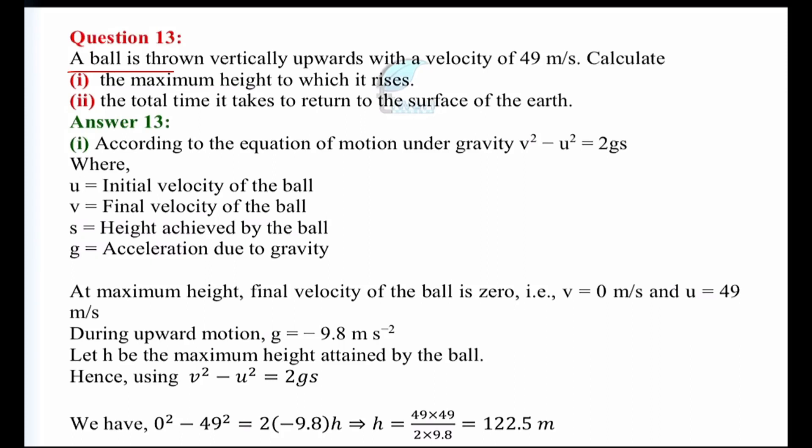Question number 13: A ball is thrown vertically upward with a velocity of 49 meters per second. We have to calculate the maximum height to which it rises and the total time it takes to return to the surface of the earth. The ball is thrown in the upward direction, acting against gravity. First we will solve the first part and then proceed to the next.